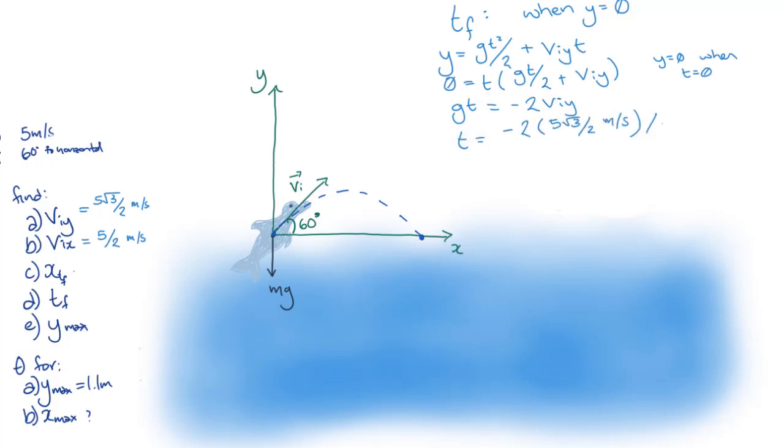Don't forget that gravity is acting downwards, so g is negative 9.8m per second squared. So we end up with the total time of flight, tf, is equal to 0.884 seconds to 3 significant figures.